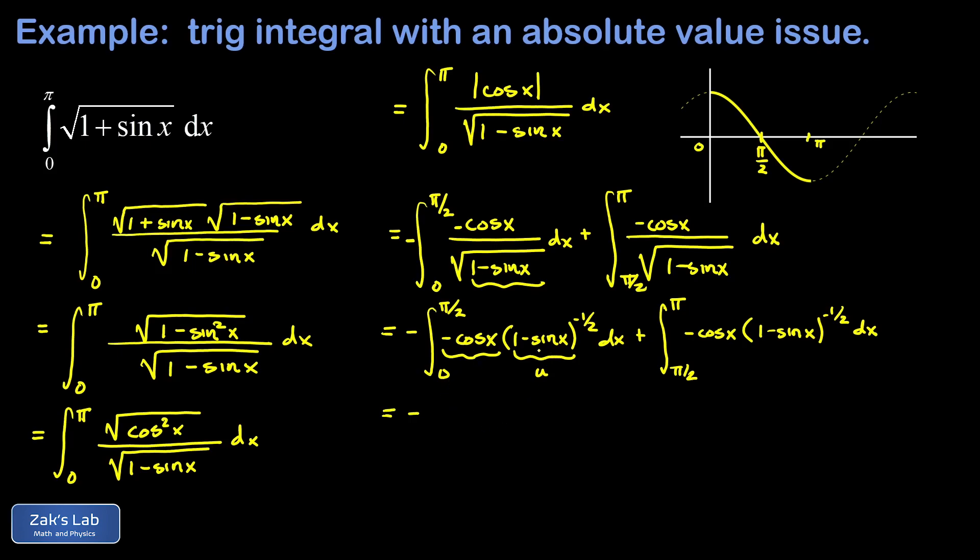We apply the power rule and we end up with 1 minus sine x to the 1 half power. We're adding 1 to the exponent there and then dividing by the resulting exponent. Well dividing by 1 half is the same as multiplying by 2. So I get negative 2 times the quantity 1 minus sine x to the 1 half evaluated from 0 to pi over 2.